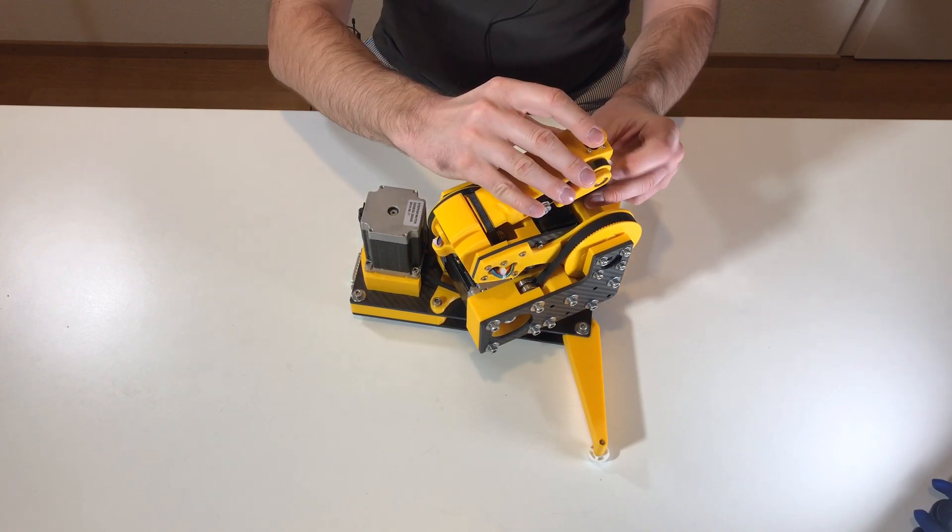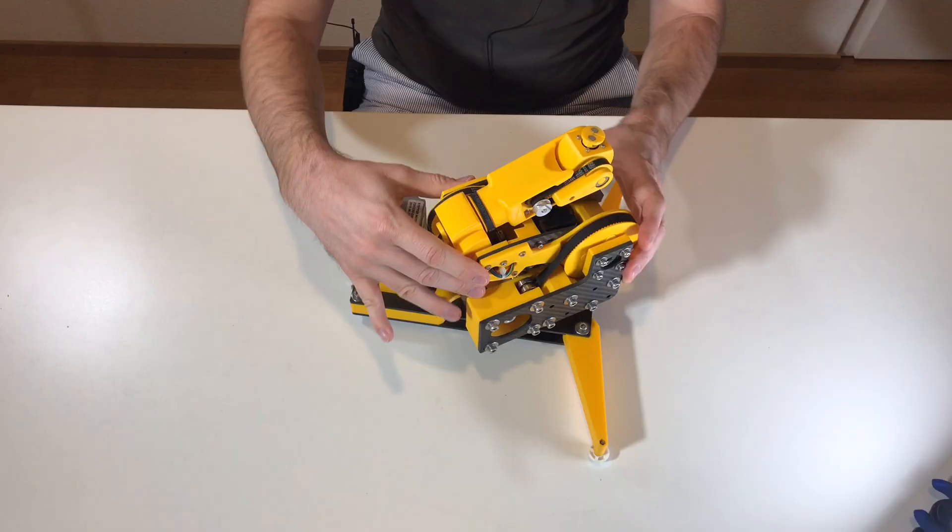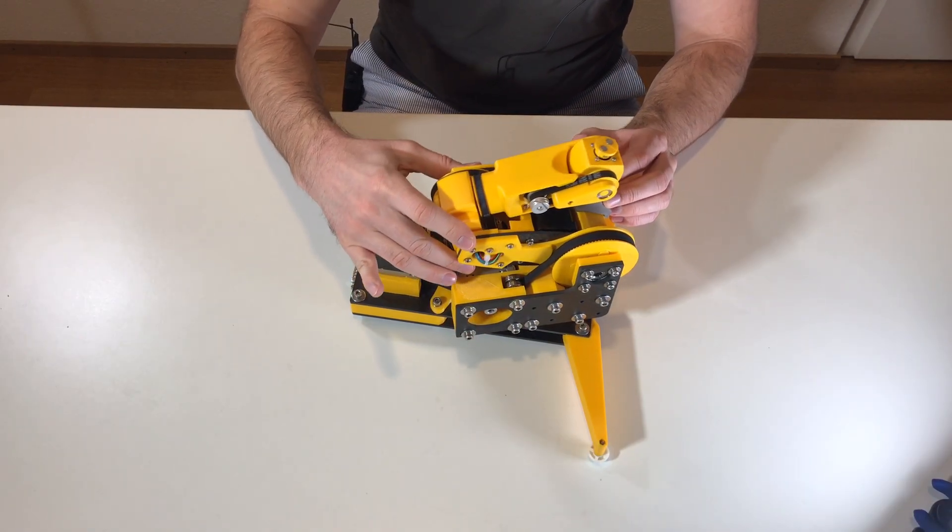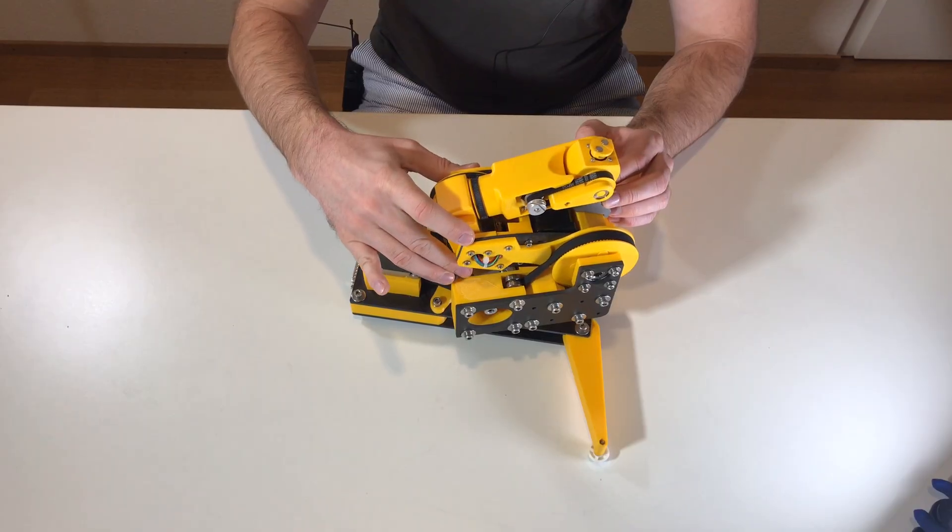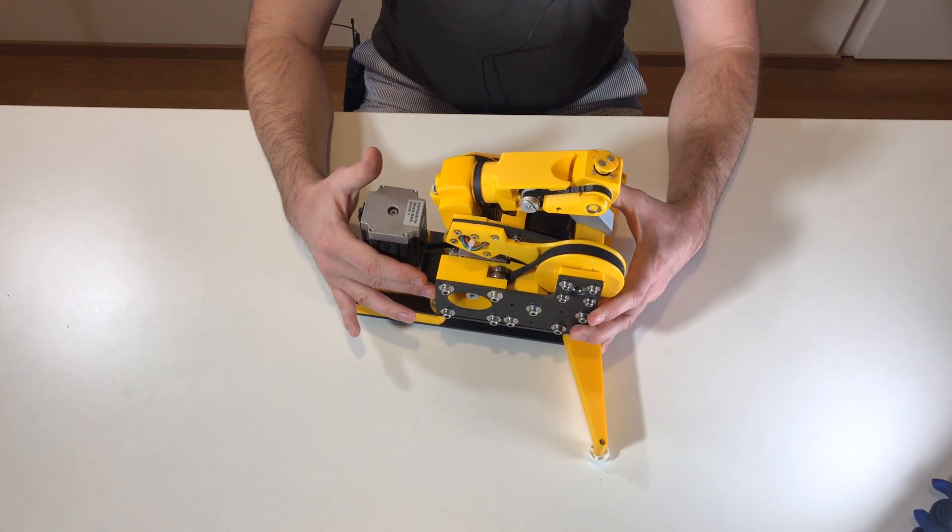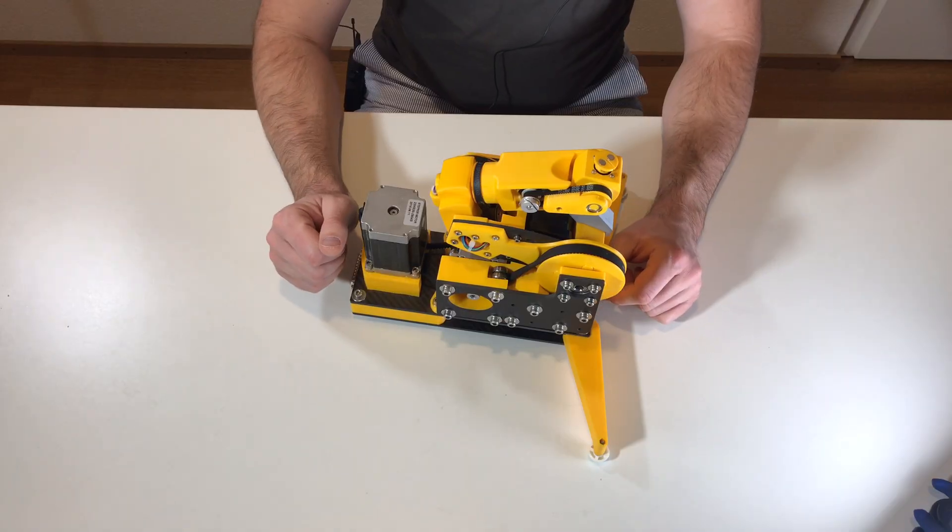There is also some minor issues, like for example, one of them is that this part touches the belt. Maybe you can see it. This is less important, but still I will fix it. So let's look at Fusion 360.